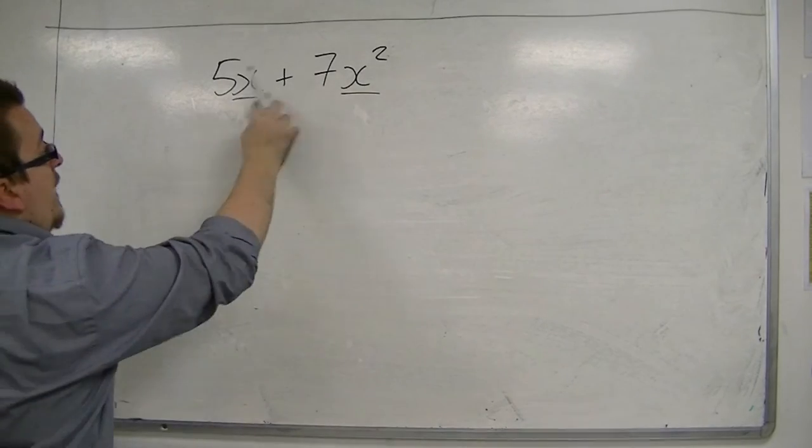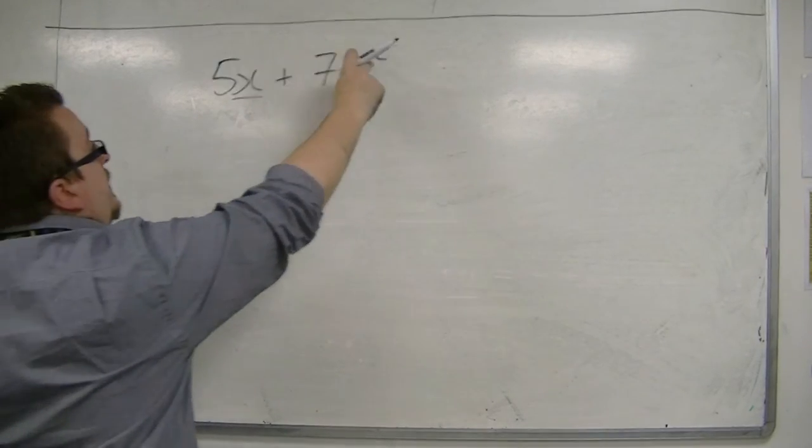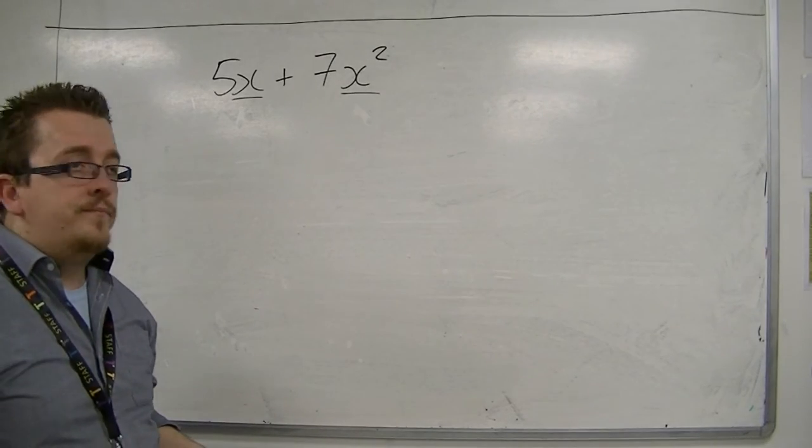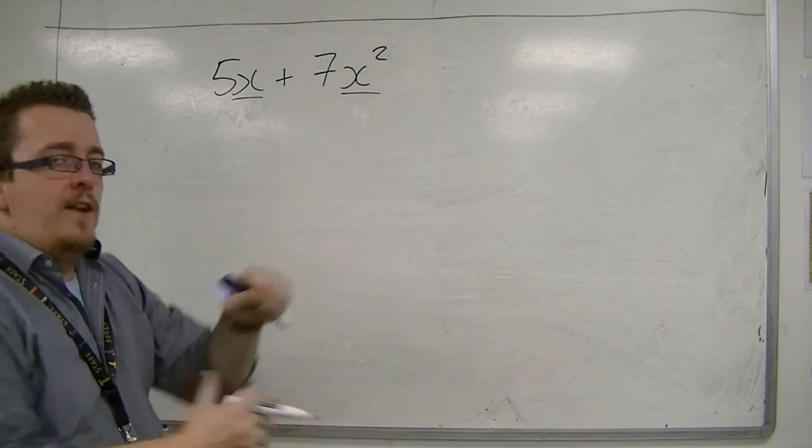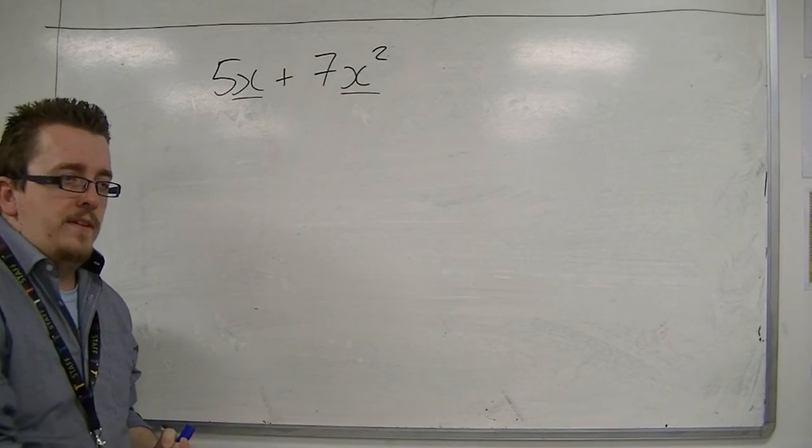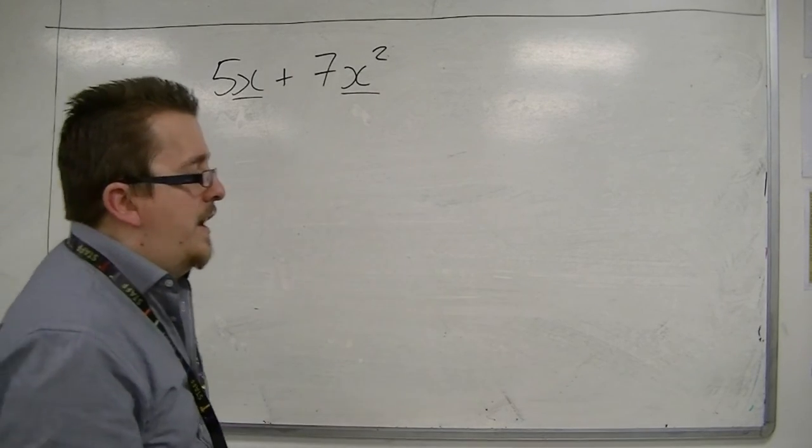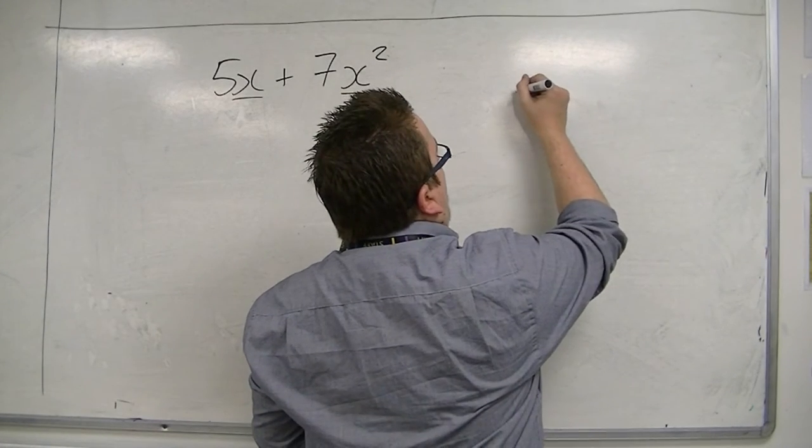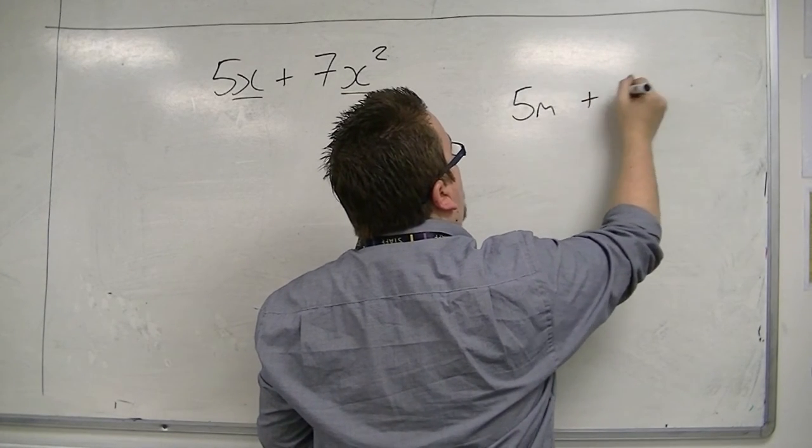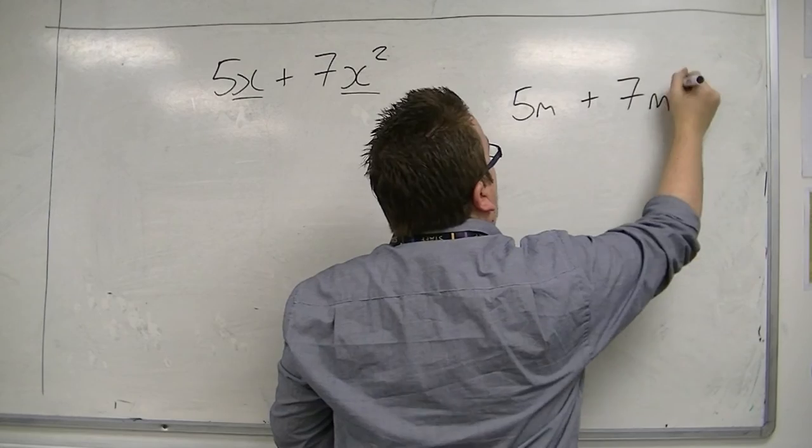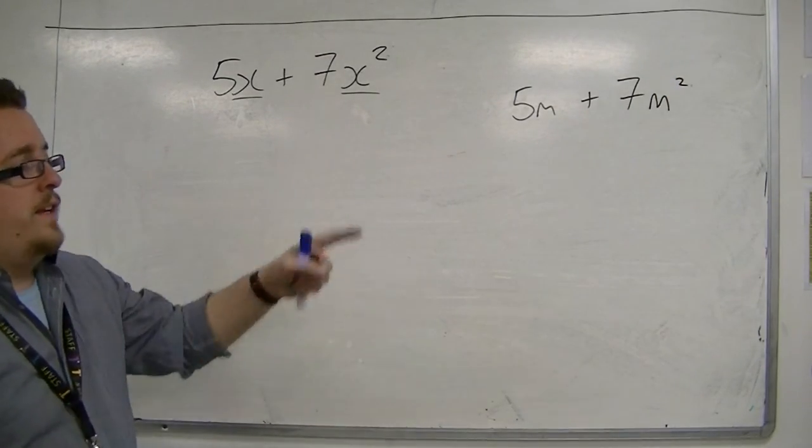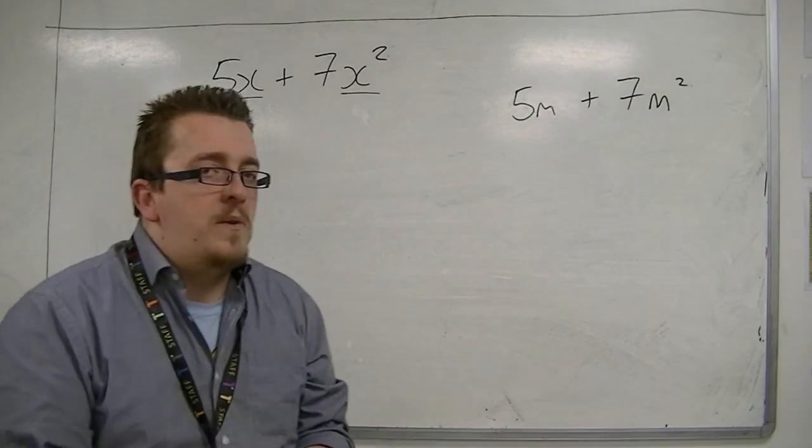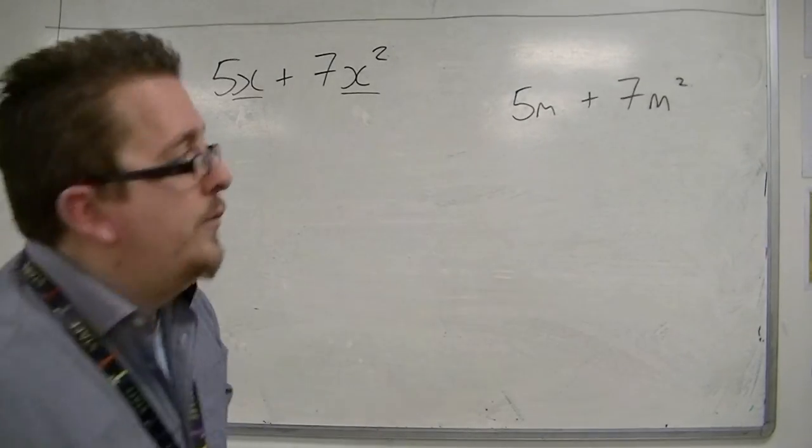I know they both have an x in them, but the fact that it has that squared there changes it completely. This is kind of like a length, and that's an area. And we cannot combine lengths and areas together. So if I had 5 metres plus 7 square metres, then I've got a length and an area, and I just cannot combine them together. So it doesn't work.